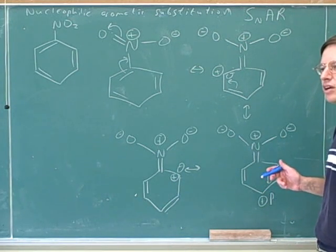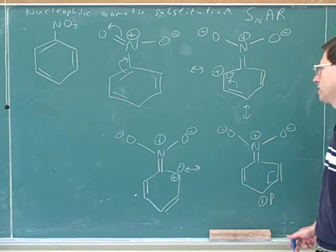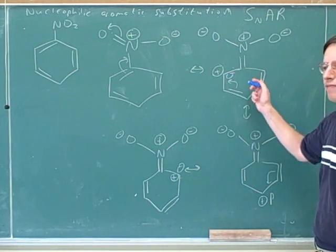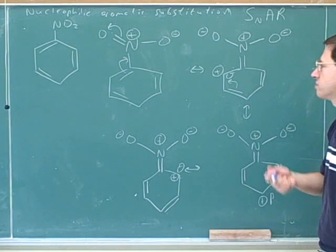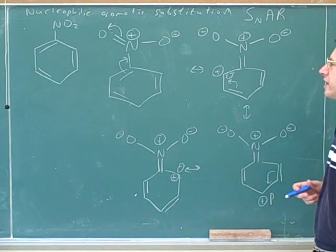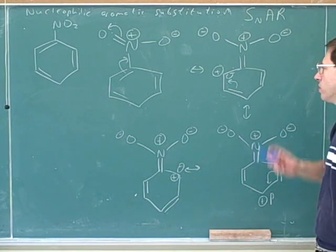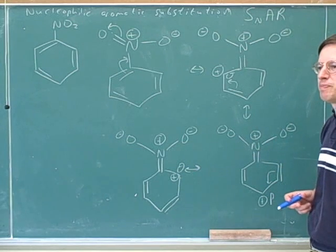We've seen that even though benzene has six carbons, the resonance structures usually only involve three of the carbons. So here we have this carbon, this one, and this one. This is what you've already predicted, that this electron withdrawer is going to be activating the ortho and para positions, but not the meta position.